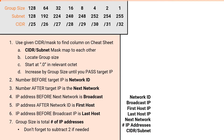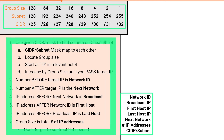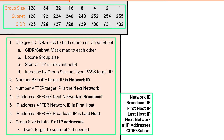In video one, we illustrated the seven attributes you can derive from a subnetting problem. In video two, we covered how to create the subnetting cheat sheet. In video three, we talked through the seven steps to use the cheat sheet to solve for all the attributes. For more details on any of these, please check out those respective videos.